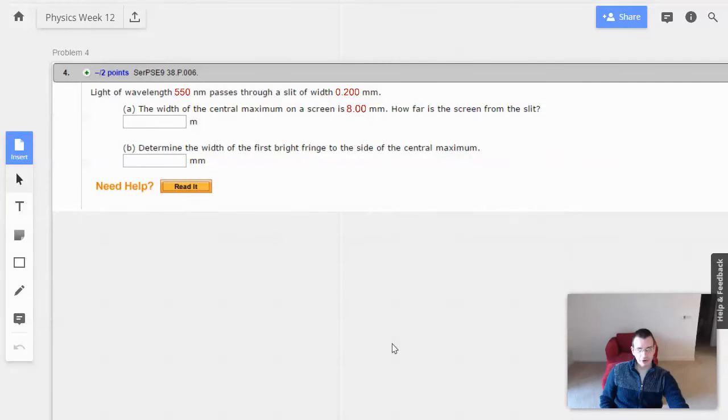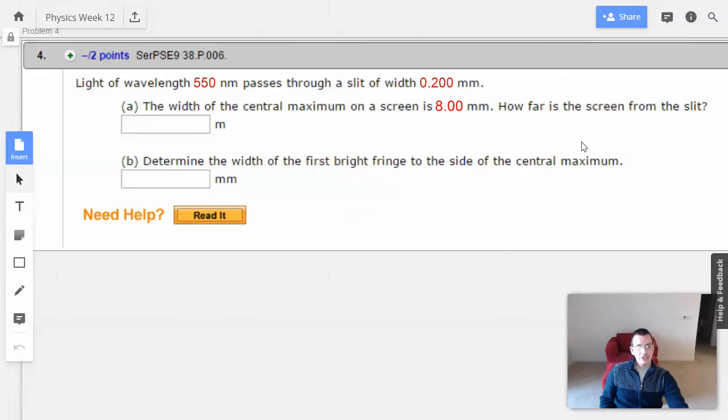Week 12 problem 4. Light of wavelength 550 nanometers passes through a slit of width 0.2 millimeters. The width of the central maximum on a screen is 8 millimeters. How far is the screen from the slit? Determine the width of the first bright fringe to the side of the central maximum.